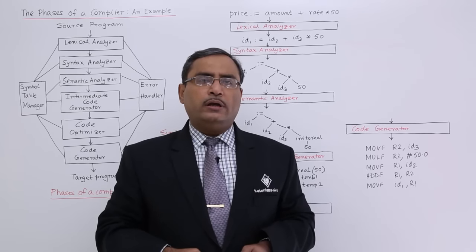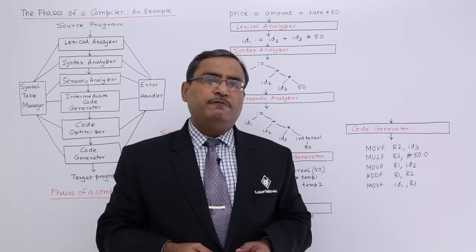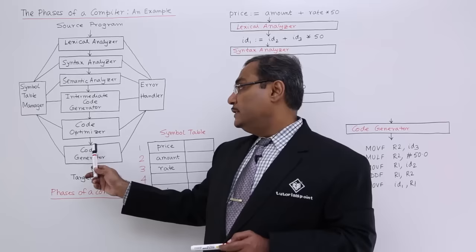In this session we are giving one example of phases of a compiler. In our earlier video we have discussed that compiler does the compilation or translation process through multiple phases: lexical analyzer, syntax analyzer, semantic analyzer, intermediate code generator, code optimizer, and the last one is code generator.